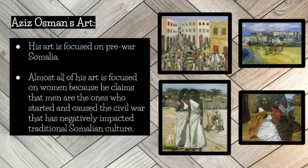Almost all of Osman's work about Somalia focuses on pre-war Somalia. He claims he doesn't want Somali youth to forget their roots, so he creates images and depictions of what life was like before the Civil War, so that youth would be able to understand and carry on the traditions and cultures that were present before. Additionally, he only focuses on women and girls in his paintings because he claims that men are the ones who started and caused the Civil War that negatively impacted Somalian culture.